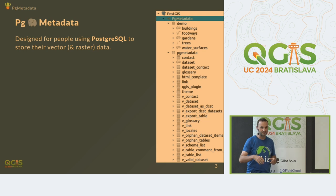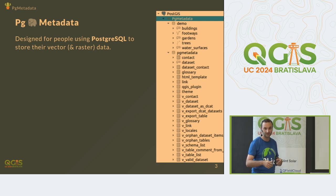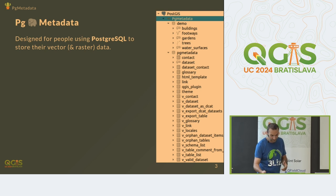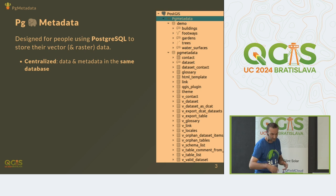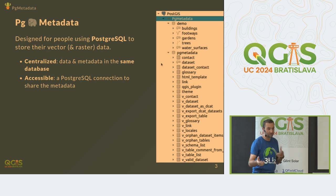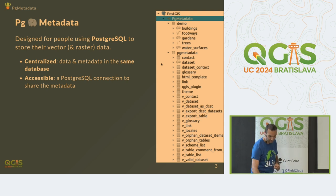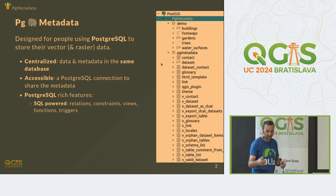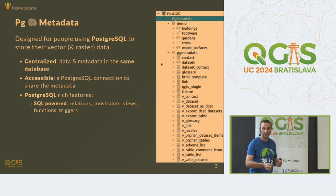So we started the project PG Metadata. It's a QGIS plugin to store metadata about tables stored in a PostgreSQL vector database, and it works also for raster. It's centralized — it's a schema, you can see it on the right side as pgmetadata. We're storing internal tables. It's accessible because it's easy — you just need to share your connection and you have all your metadata within your database. We benefit from all the features of PostgreSQL, which is a very powerful database engine with relation constraints, views, functions, and triggers that we are using in this plugin.